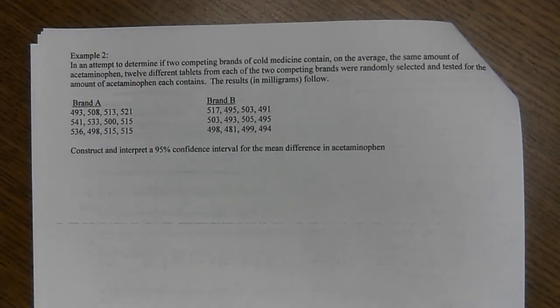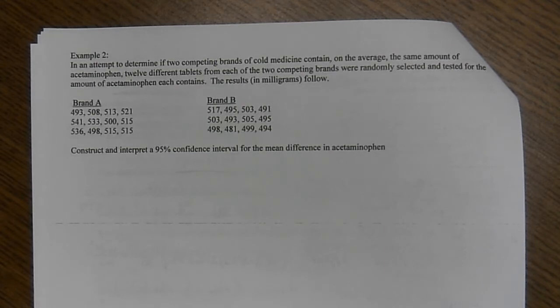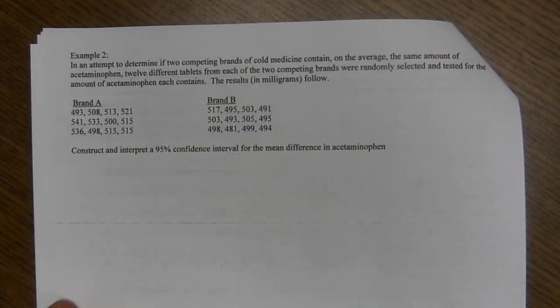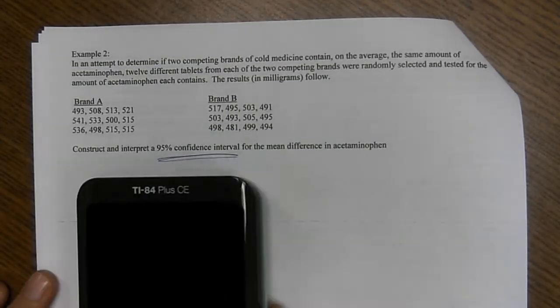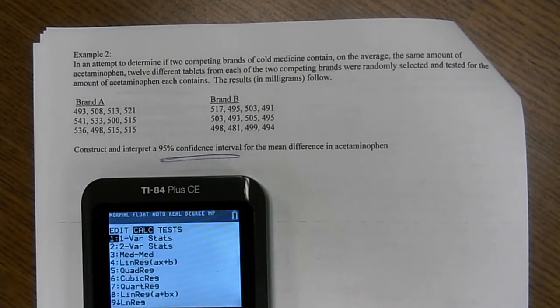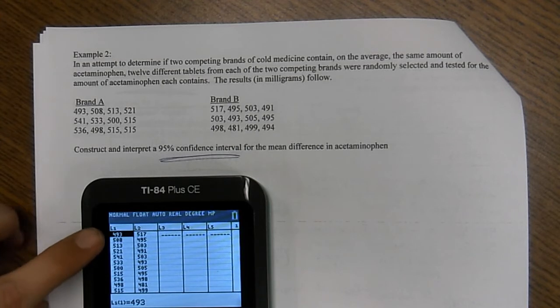So, in an attempt to determine if the two competing brands of cold medicine contain, on average, the same amount of acetaminophen, 12 different tablets from each of the two competing brands were randomly selected and tested for the amount of acetaminophen each contained. Here are the results in milligrams. Construct and interpret a 95% confidence interval for the mean difference. So, in your calculator, go ahead and put brand A in list one and brand B in list two.